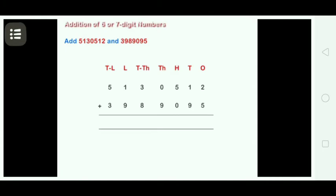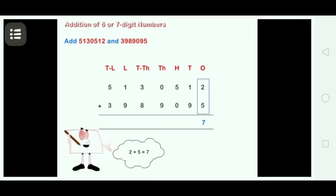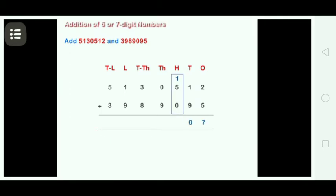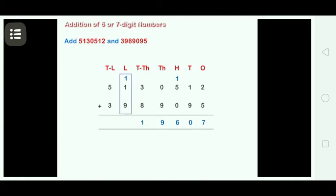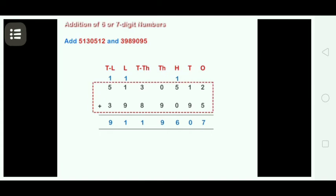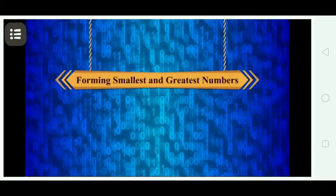Arrange the digits of the given numbers in the column form, and start adding from the 1's column till the 10 lakhs column, regrouping numbers when needed. The sum of 51,30,512 and 39,89,095 is equal to 91,19,607.